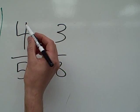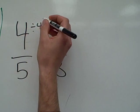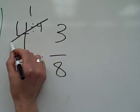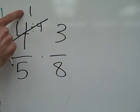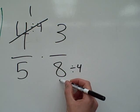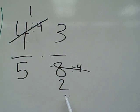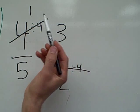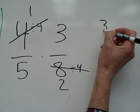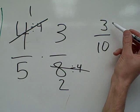Divide. Get ready. Buckle up! Four divided by four is one. I'll cross that off, and one is my new numerator. Eight divided by four is two. I'll cross that off, and I have a new denominator. Now we can multiply again: one times three is three, and five times two is ten.